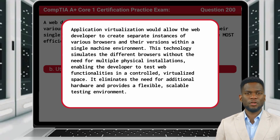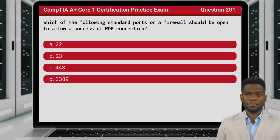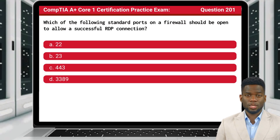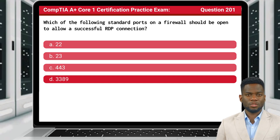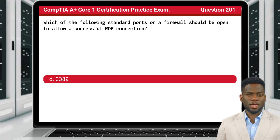You have completed 200 questions! How about one more question as a reward for your hard work? Question 201: which of the following standard ports on a firewall should be open to allow a successful RDP connection? The answer is D: 3389.